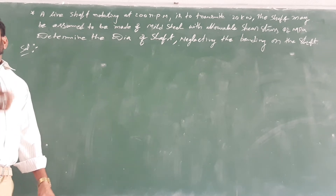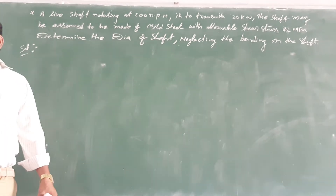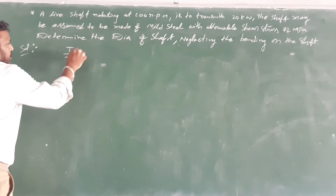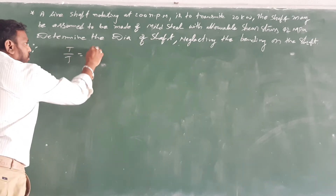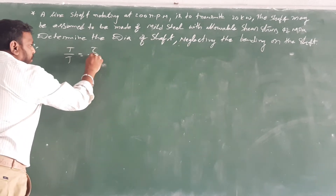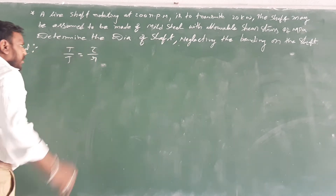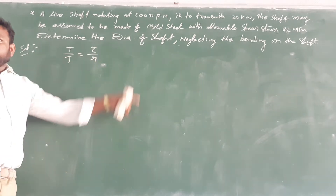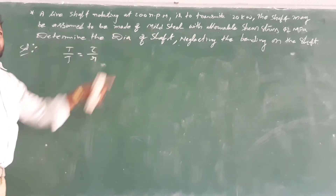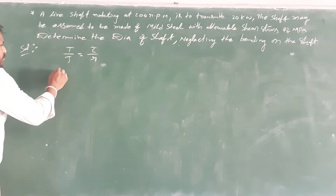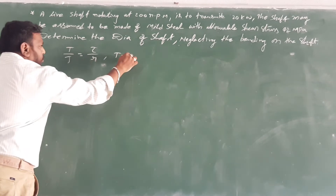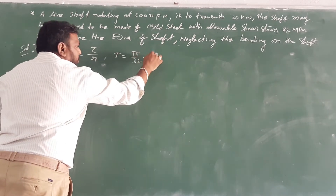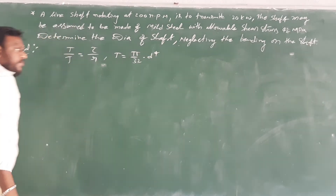The torsion equation is T/J = τ/R. So J is equal to T divided by R. For a solid shaft, J is equal to π/32 times D to the power 4.